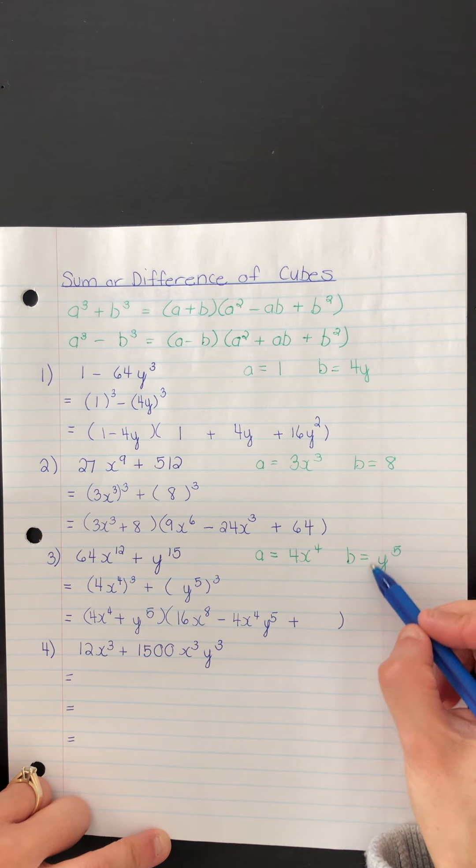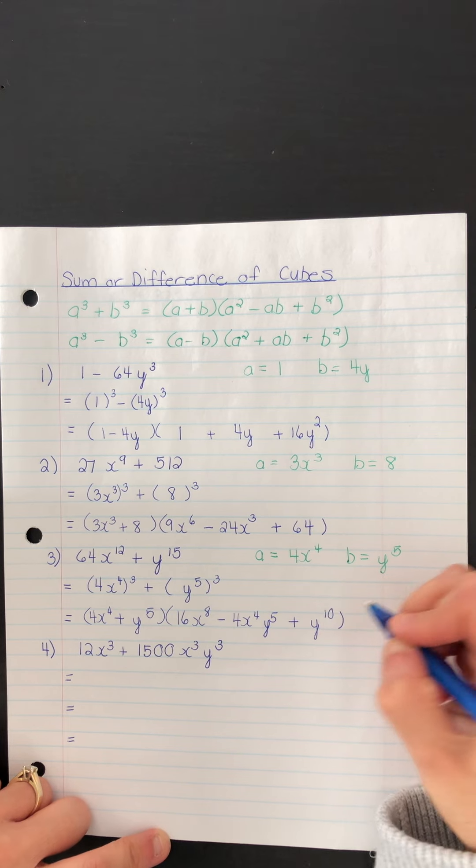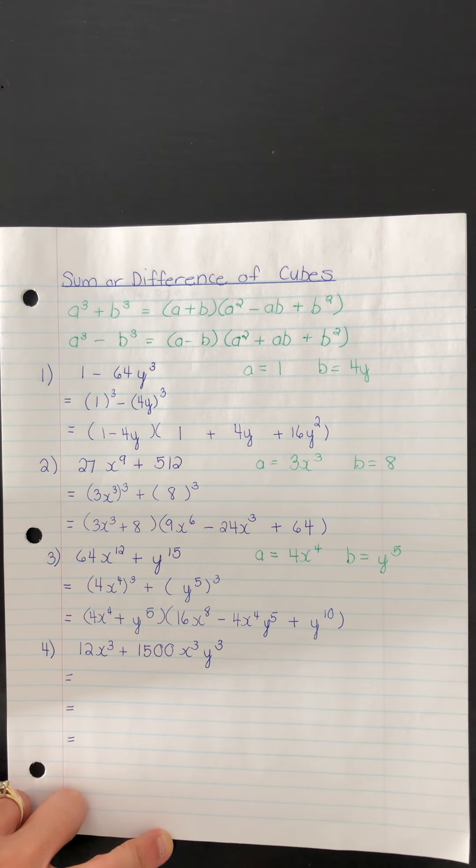Lastly, B squared. And when you square y to the 5, you get y to the 10. So when you square, the exponents are doubled.